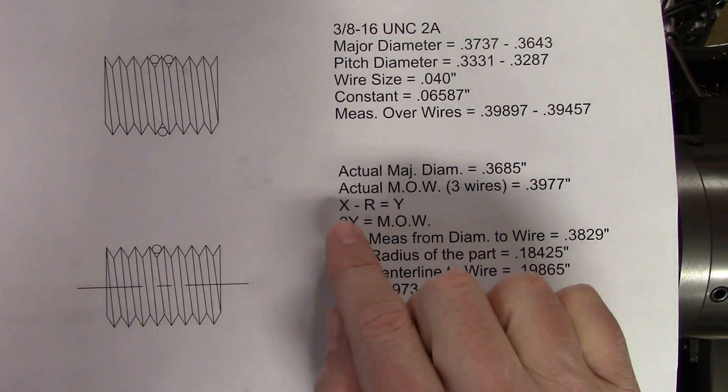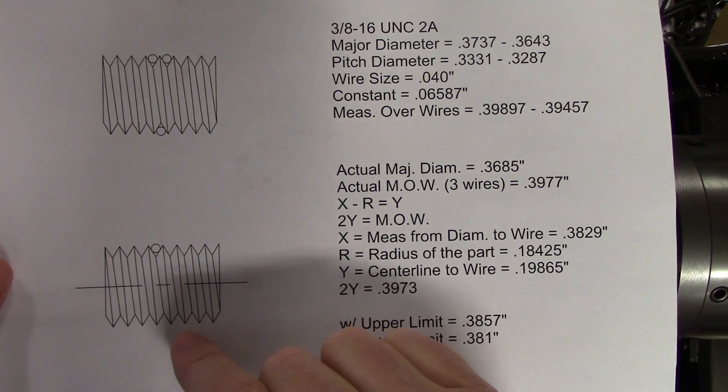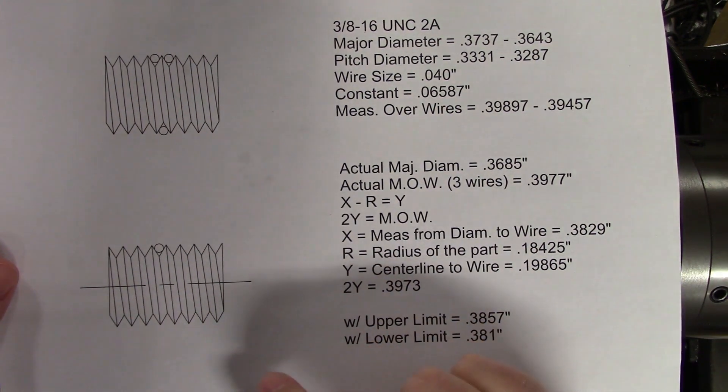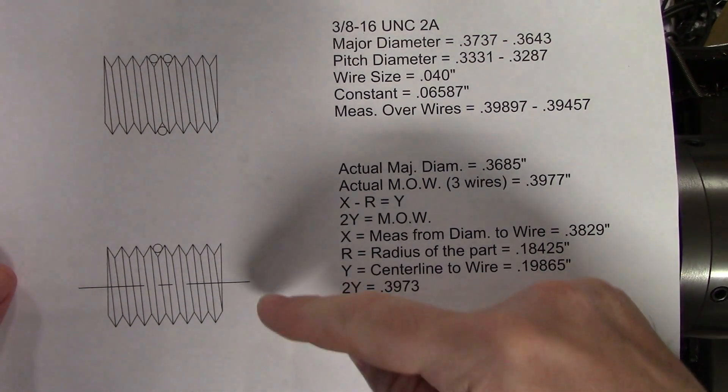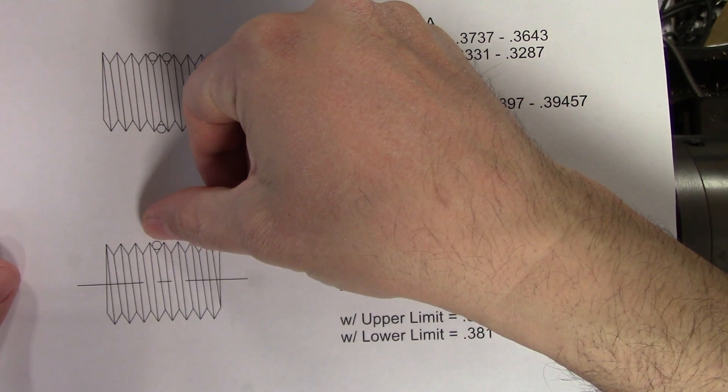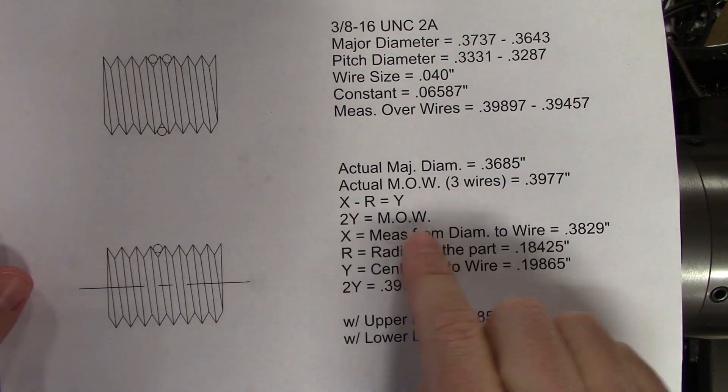Joe uses the formula X minus R equals Y, where X is the measurement from the diameter over to the wire, and R is the actual radius of the part. That gives you this distance here from the center line to the top of the wire. You'll need to multiply that measurement by two to get your measurement over wires.